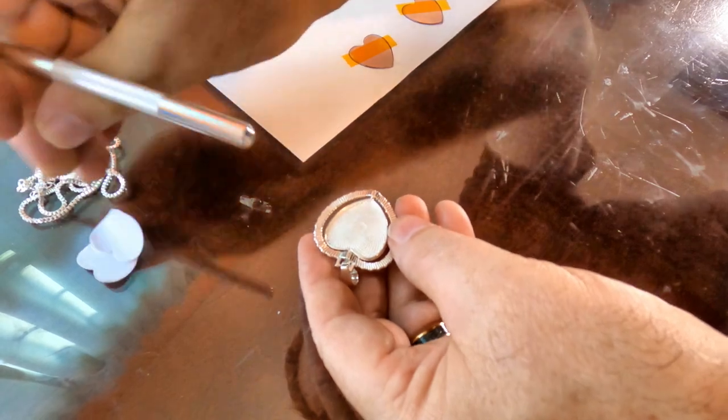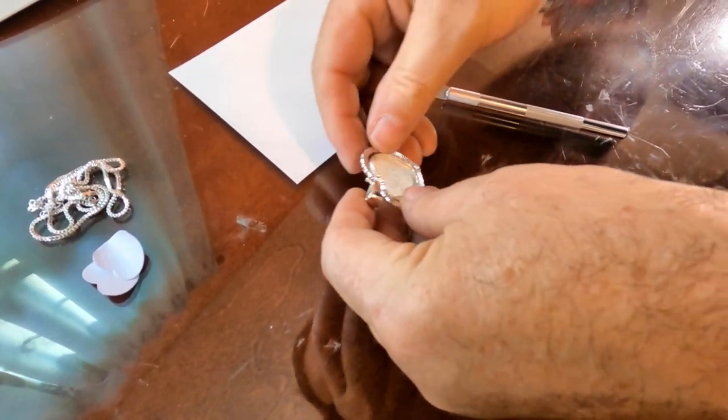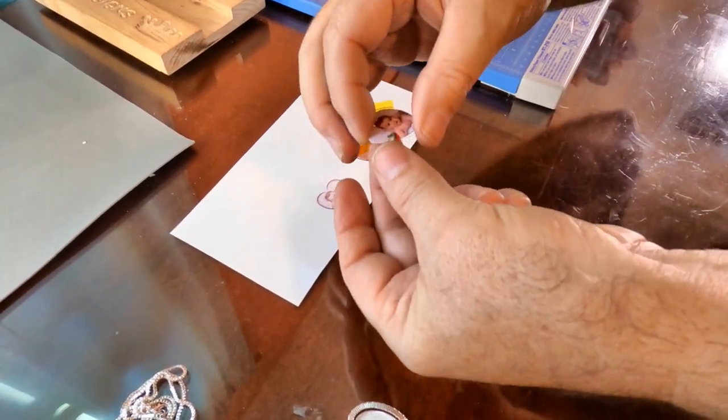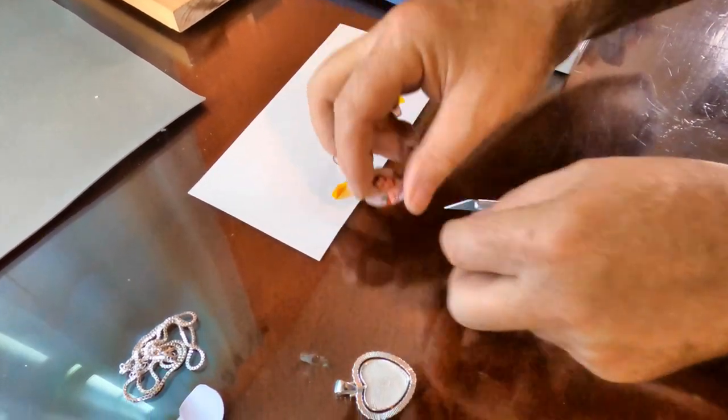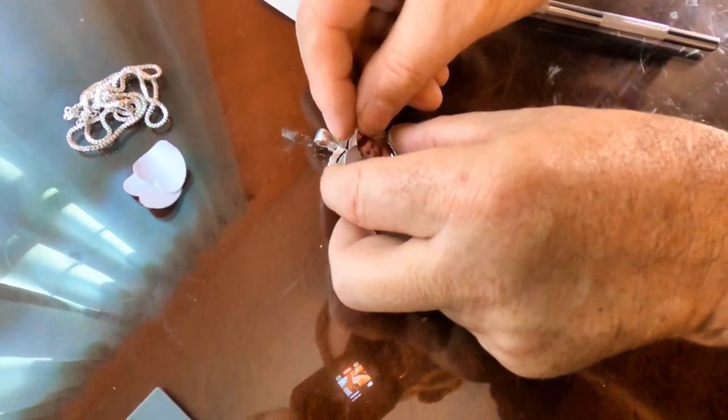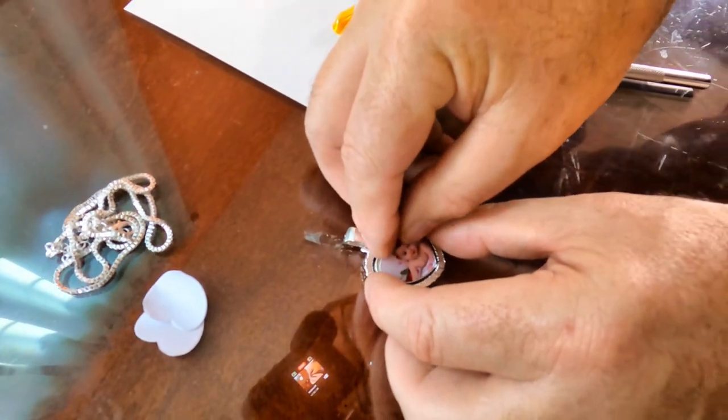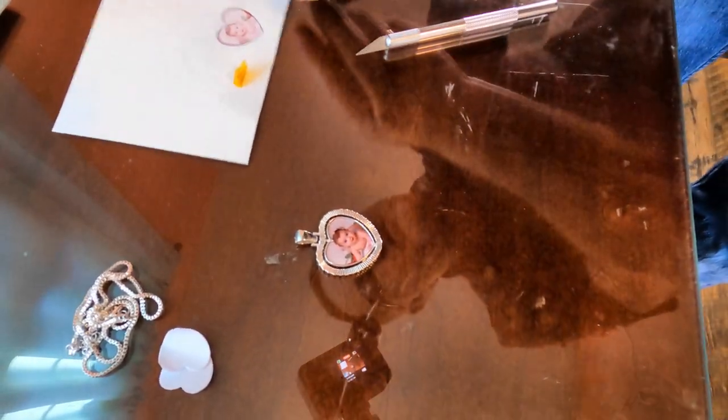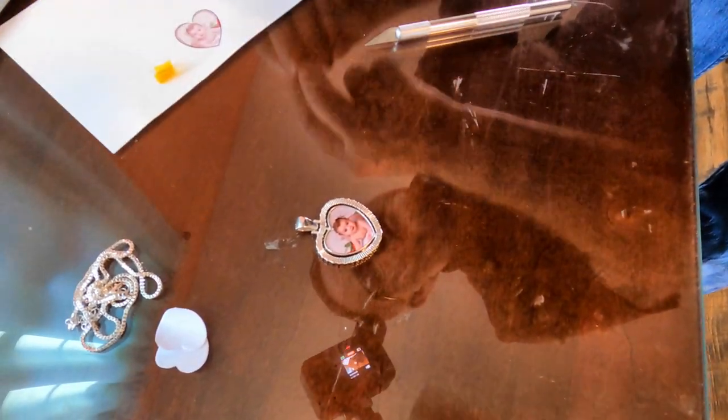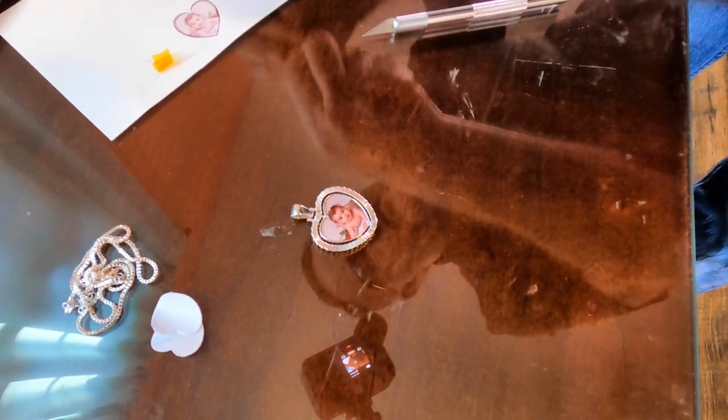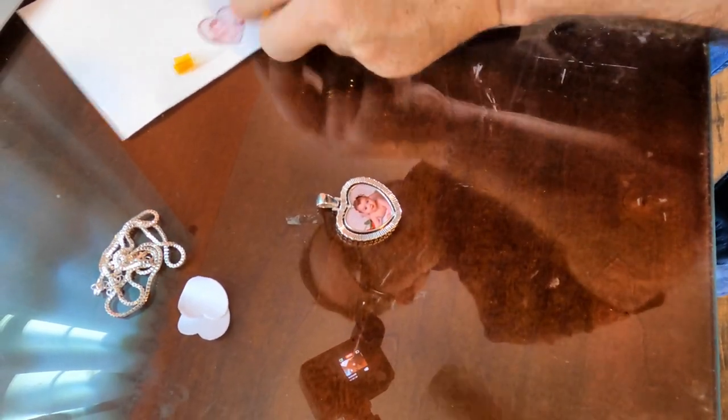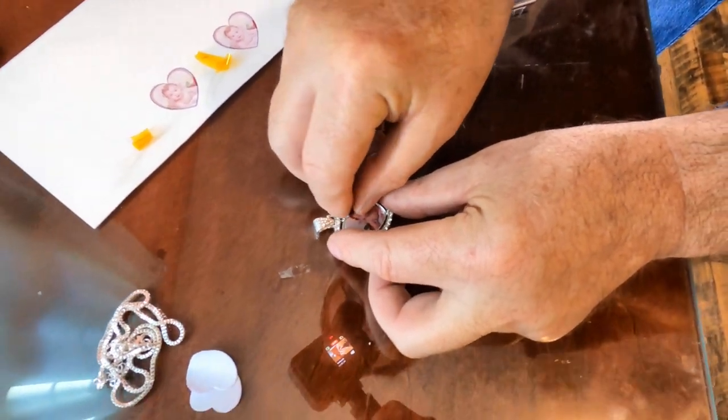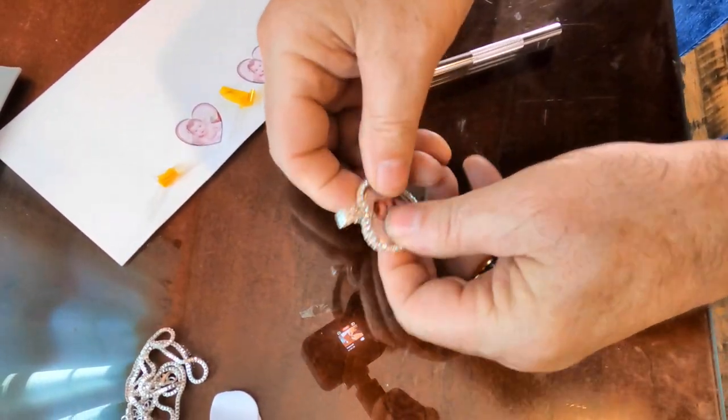Once you get that like that, we're going to take our little sublimation blanks right here and we will just place it in there and push it down just like that. We'll take the other one, just pull the tape off of it and turn it over. Place it in there, push it down, kind of smoosh it in there, and there you go.